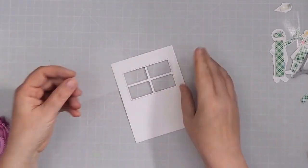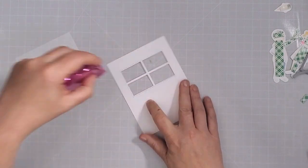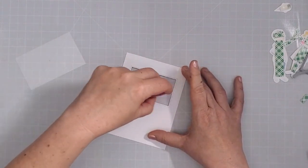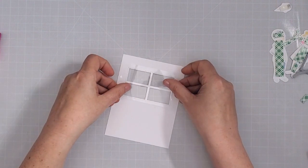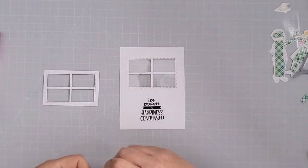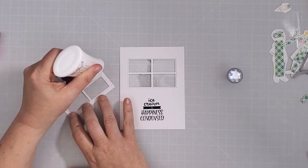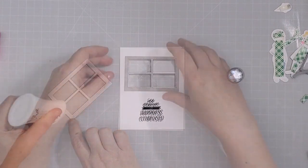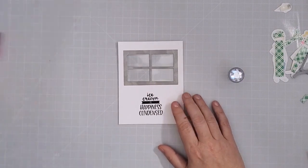Next I used some acetate and my tape runner to put glass into the window and then I used some Nuvo deluxe adhesive to attach the window frame to the front of the panel. I've been using this glue for months now and it never clogs. I love it. I put an acrylic block over top just to hold it in place while the glue sat.